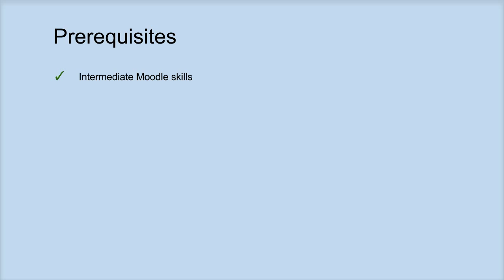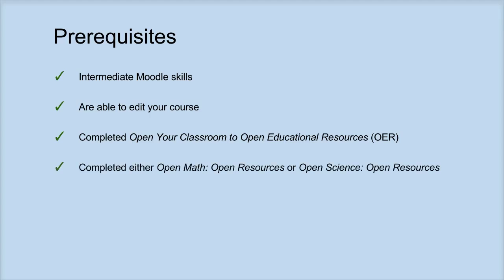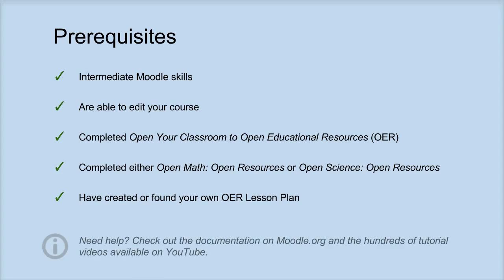It is important to note that in order to use this course successfully, you should possess the following skill set. You have an intermediate level of understanding using Moodle and know how to edit your course. You have completed the previous courses Open Your Classroom to Open Educational Resources and either Open Math Open Resources or Open Science Open Resources, and have an OER lesson plan to build your learning activity. If you don't have experience with Moodle, Moodle.org also provides extensive support and tutorials for using this course management system. You may want to spend some time reviewing tutorials found through a search engine or YouTube tutorial videos.